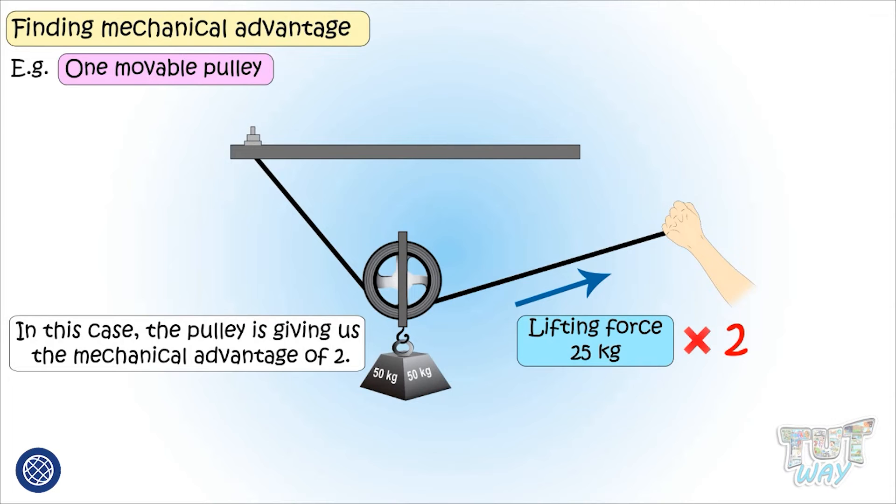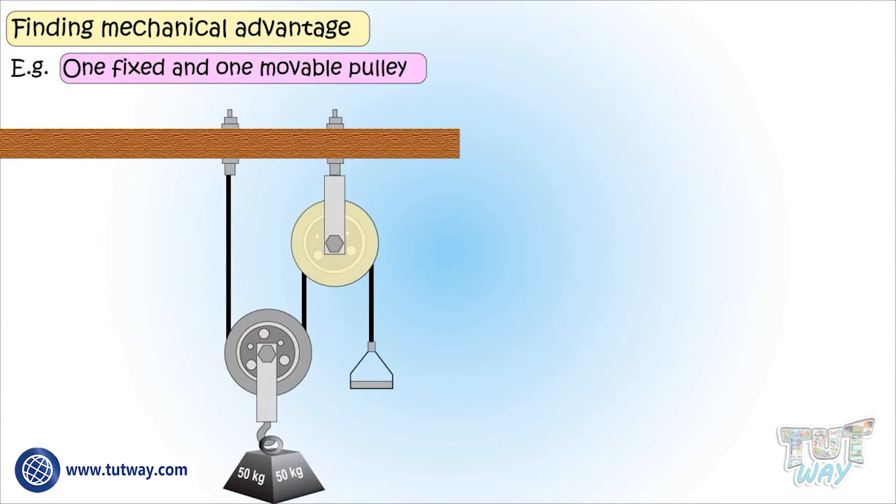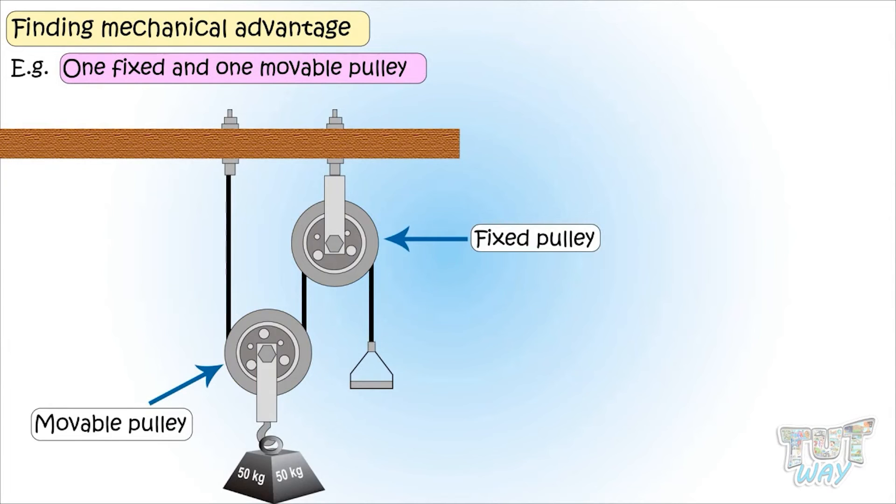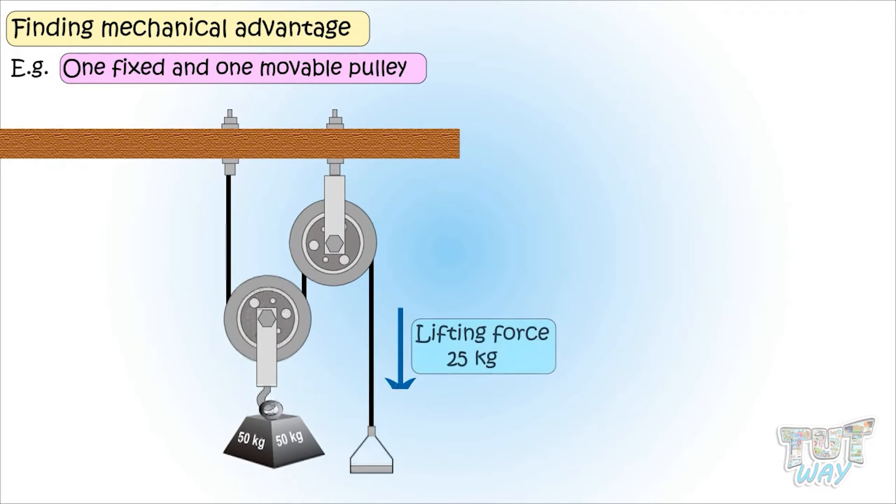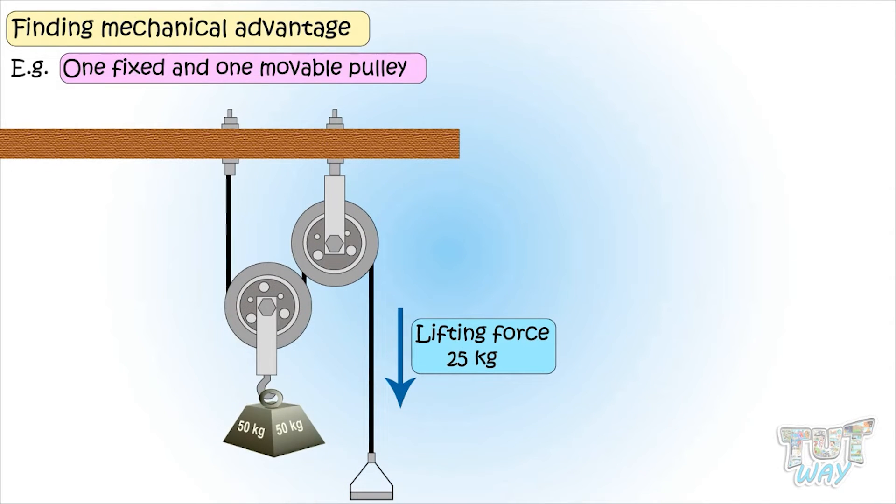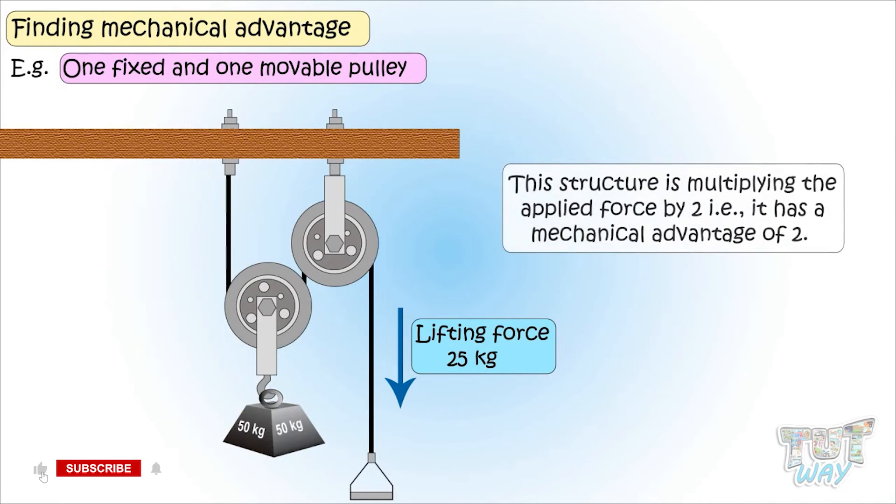Next example. Here we have one fixed and one movable pulley, that is, a block and tackle system. Here, one of the pulleys is attached or fixed to some support, and one pulley is attached to the load. In this case, it takes 25 kg effort to lift 50 kg weight. So, this means the structure is multiplying the applied force by 2. That is, it has mechanical advantage of 2.